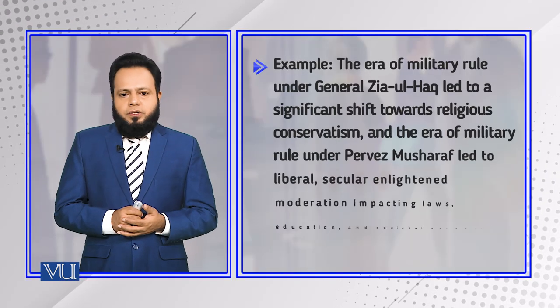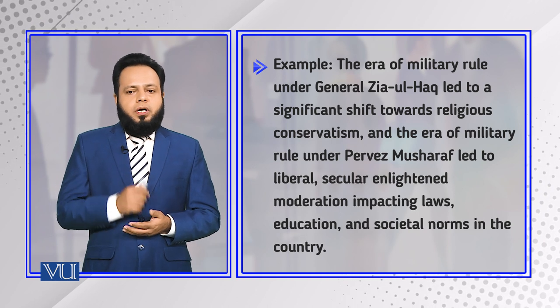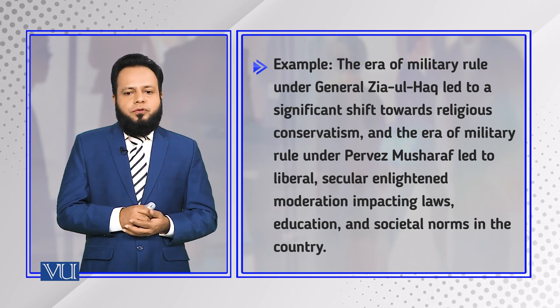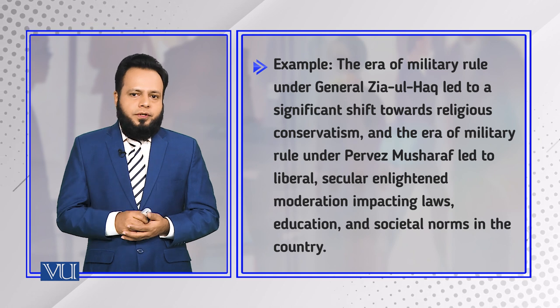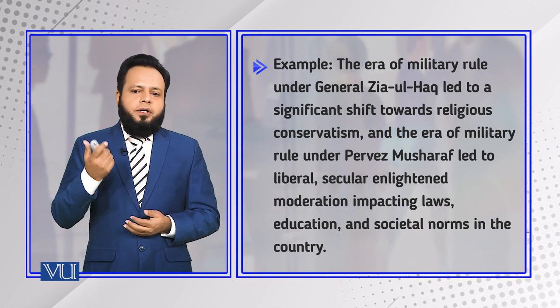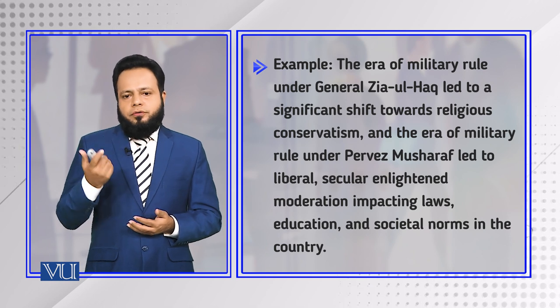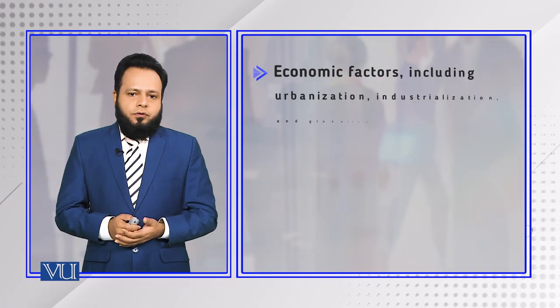For example, the era of military rule under Zia ul-Haq's regime led to a significant shift towards religious conservatism, while the era of military rule under Pervez Musharraf led to liberal, secular, enlightened moderation, impacting laws, education, and societal norms in the country. These two contrasting periods are visible even within military dictatorship, but it depends on how people perceive them — which is also based on their personal prejudice, liking, or disliking.